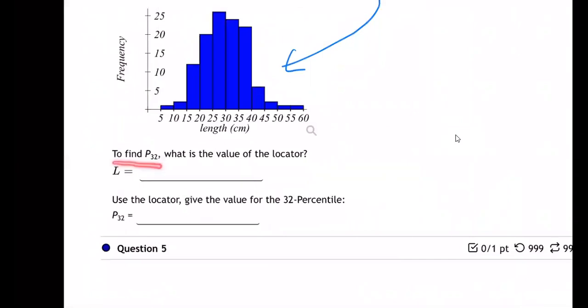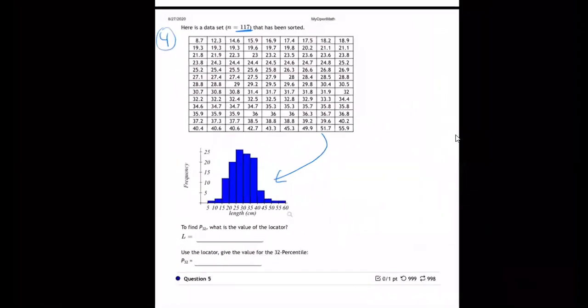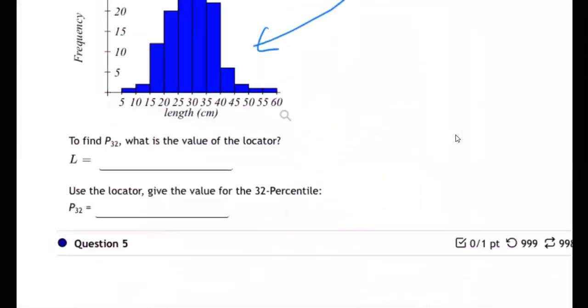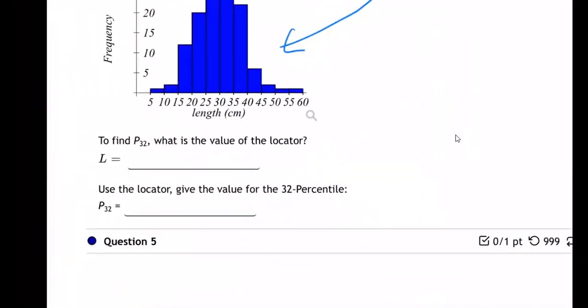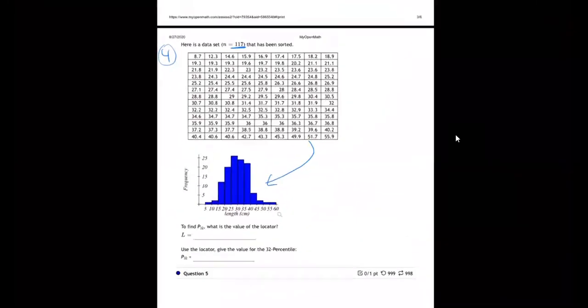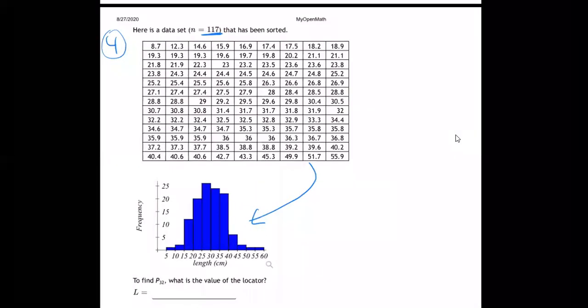Here comes their actual question. To find P32, what is the value of the locator? So basically what they're asking in this question is to use the locator, give the value for the 32nd percentile. They want us to find the 32nd percentile of this data set.